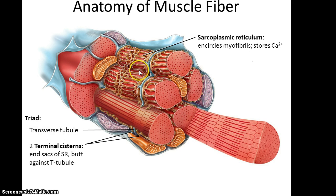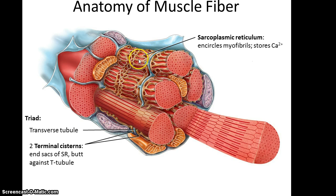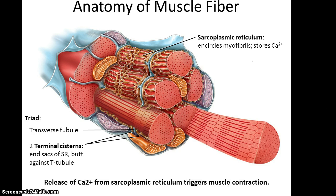You also see an orangish structure called sarcoplasmic reticulum, which is similar to endoplasmic reticulum. However, its structure is slightly different and it encircles the myofibril structures. The purpose of the sarcoplasmic reticulum is to store calcium ions. The transverse tubule runs in between two adjacent sarcoplasmic reticulum structures, and where the terminal cisterns of the sarcoplasmic reticulum abut against the T-tubule, you get a structure referred to as a triad. The sarcoplasmic reticulum stores calcium ions which are needed to trigger the muscle to contract.